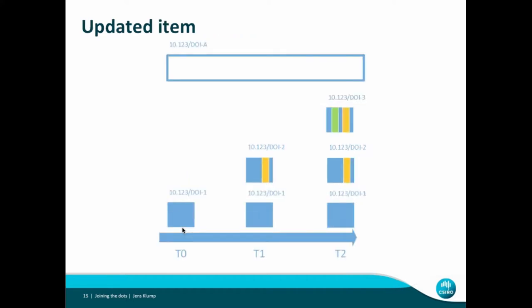If you update an item, things are somewhat different. We start at t0 with some item, then at t1 we update it, and at t2 we update it again — indicated by different colored bars. There are use cases where I want to go back to a very specific version of a dataset, so each version is identified by a different identifier: DOI-1, DOI-2, DOI-3. But some people only want the most current version. You can approach this by creating a parent object — DOI-A is the parent to DOI-1, 2, and 3. When you refer to DOI-A it takes you to the most current version; if you want a specific version, you can address it by its own name.